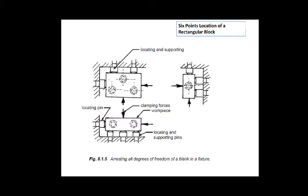Here you can see the six-point location of a rectangular block — three points at the bottom, one on the left side, and two at the back — so six-point location of a rectangular block.